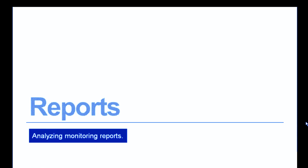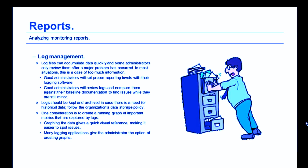Now let's move on to analyzing reports. Before we talk about analyzing reports, let's talk about log file management. Log files can accumulate data quickly, and unfortunately some administrators only review log files after a major problem has occurred. In most situations, this is a case of too much information at the wrong time. Good administrators will set the proper reporting levels with their logging software — they won't be logging all that debug information, that level 7 information, unless they're actively debugging a system or application. Good administrators will review log files and compare them against their baseline documentation to find issues while they are still minor and before they become major.